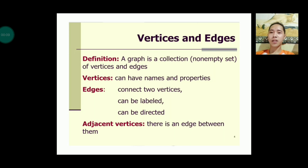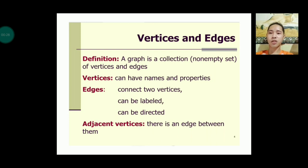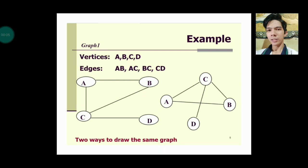A graph is a collection or non-empty set of vertices and edges. Vertices can have names and properties. Edges connect two vertices, can be labeled, and can be directed. Adjacent vertices are vertices that have an edge between them, as we can see in graph one.